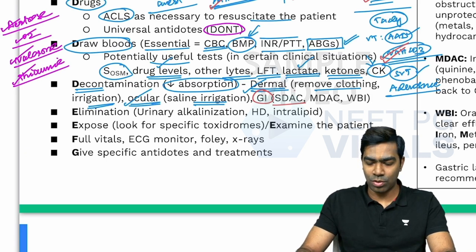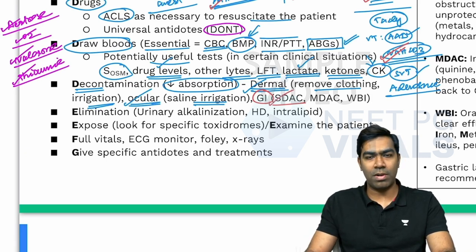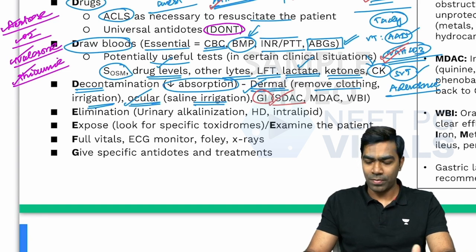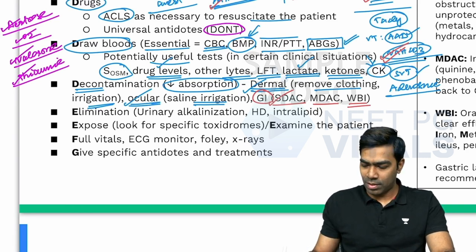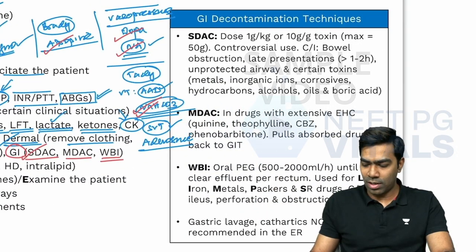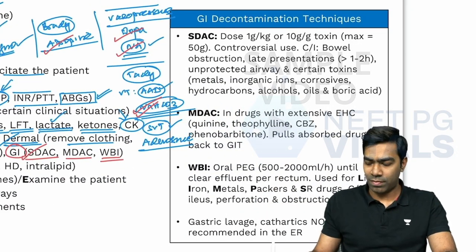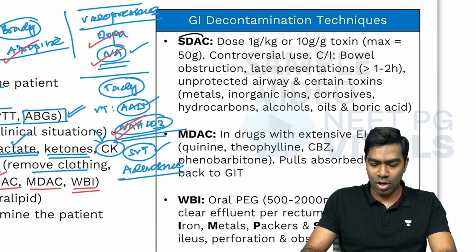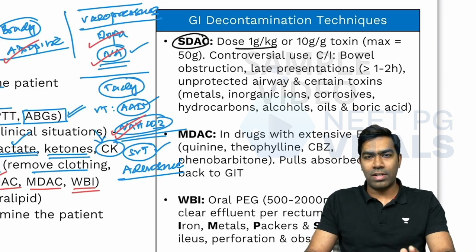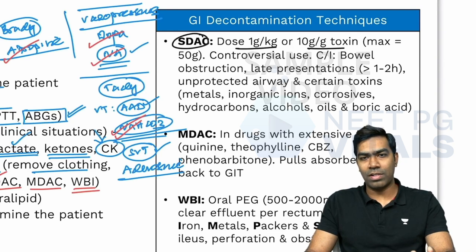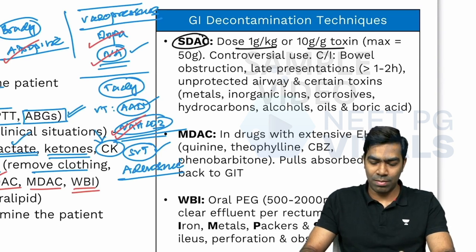Single dose activated charcoal is the most common technique performed in the emergency room for most poisons. The standard dose is 1 gram per kilogram, or 10 grams of activated charcoal per gram of toxin ingested, with a maximum dose of 50 grams in most adults. It is mixed with water and prepared as a slurry to be taken orally.